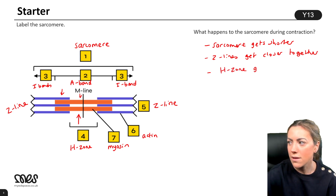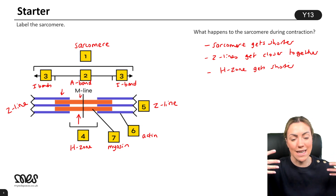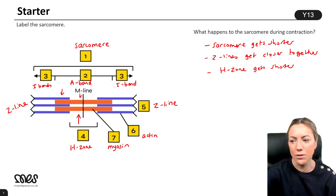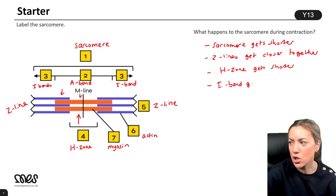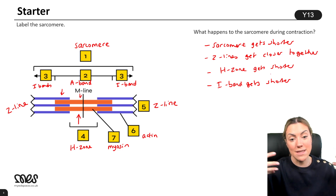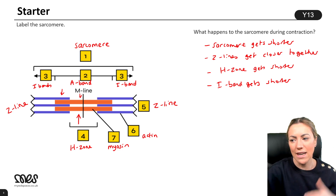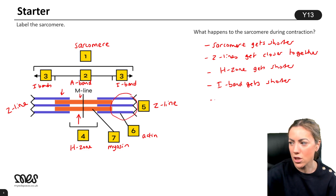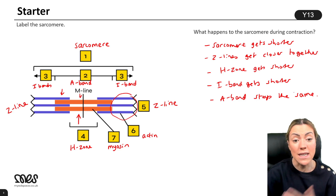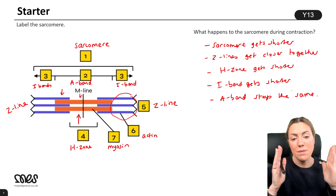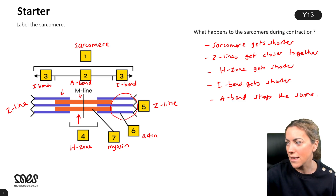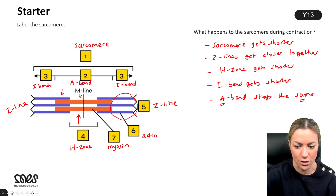The H-zone gets shorter because the actin filaments slide inwards, giving less of a myosin-only section in the middle. The I-band also gets shorter for the same reason — the actin filaments are pulled inwards over the myosin, so there's less of an actin-only region. The A-band stays the same because it's the length of the myosin filament, which does not change. A good memory trick: there's an A in the word 'same', so the A-band stays the same.